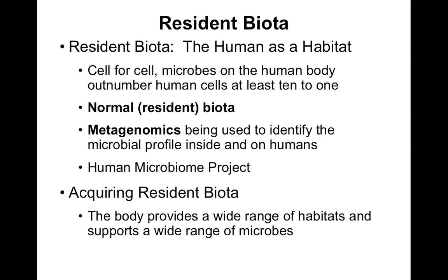Metagenomics is the ability to do deep sequencing of all the DNA in our body — both human and microbial — and then search known databases to figure out what microbes are present. We've discovered it's not as consistent as we thought; certain people harbor certain microbes, which makes their immune system slightly different. This is a hot-button topic right now — the Human Microbiome Project and all that good stuff. We acquire resident microbiota generally from the environment, and also from our mothers and occasionally our fathers.